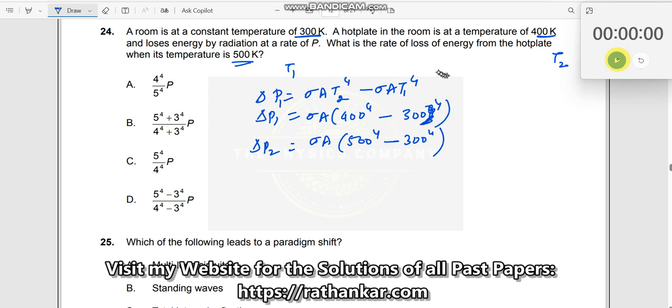Now, what is he asking? What is the rate of loss of energy? So you need to find delta P2, divide one by the other so that you can cancel off this sigma A.